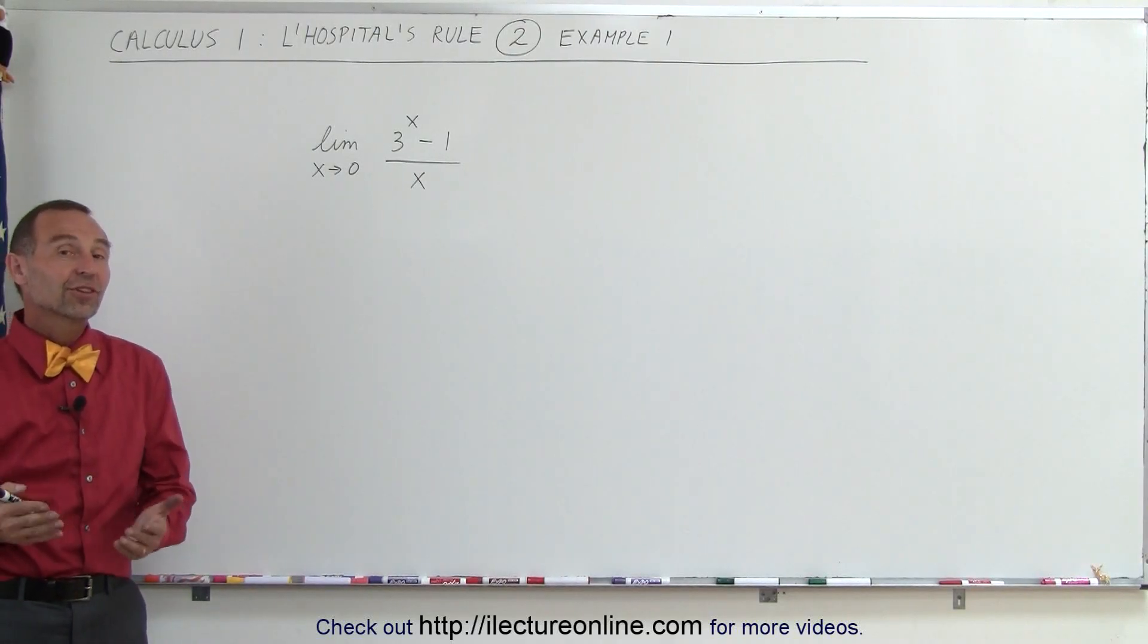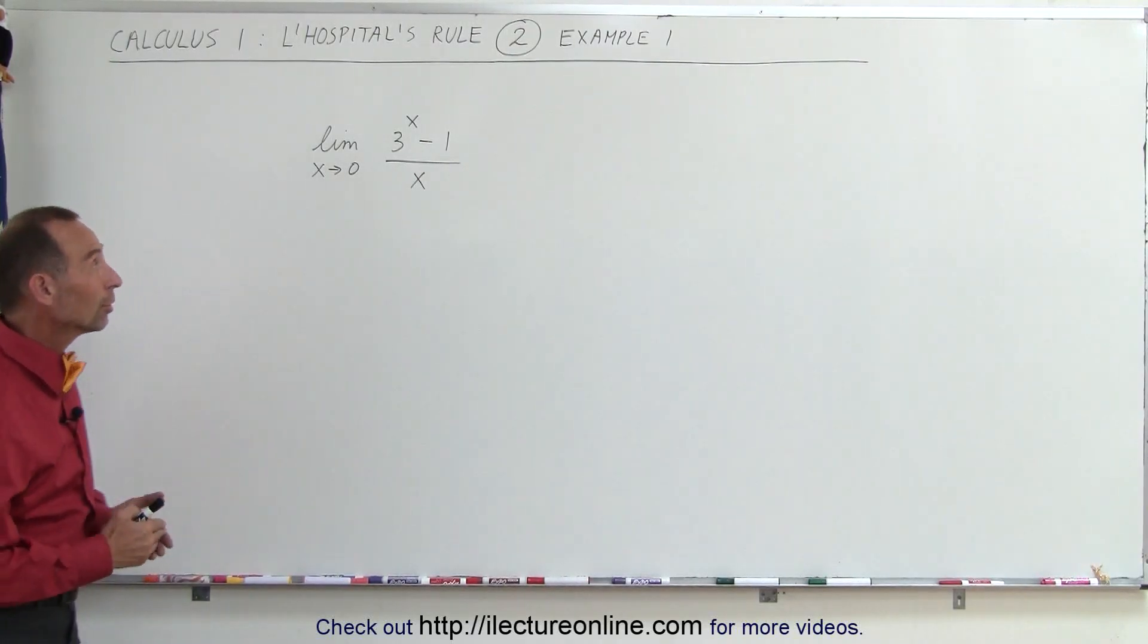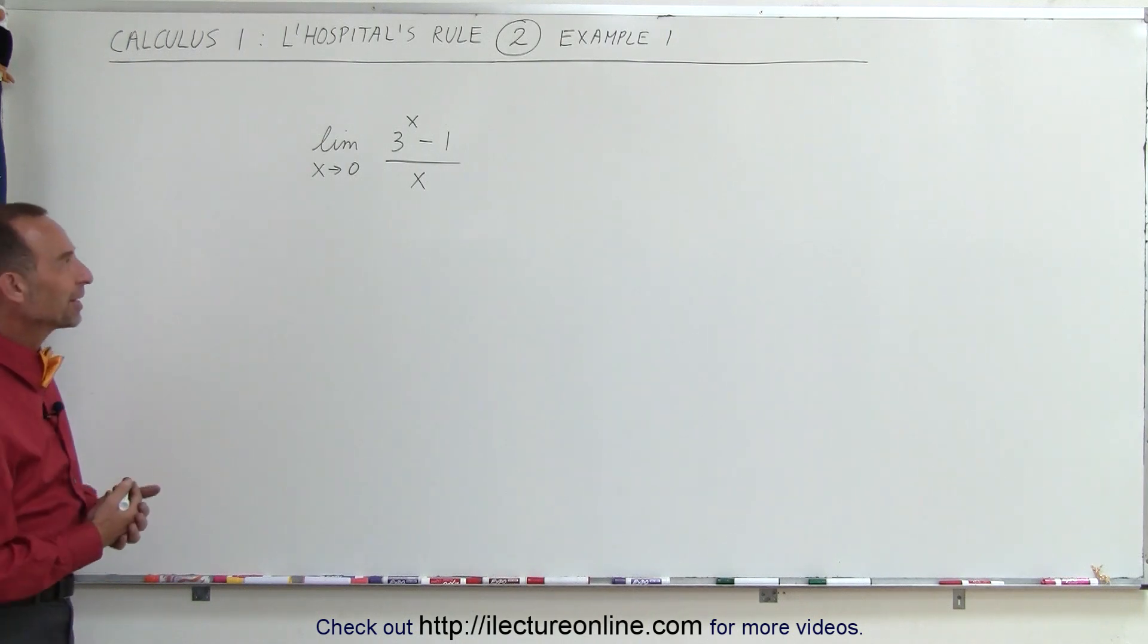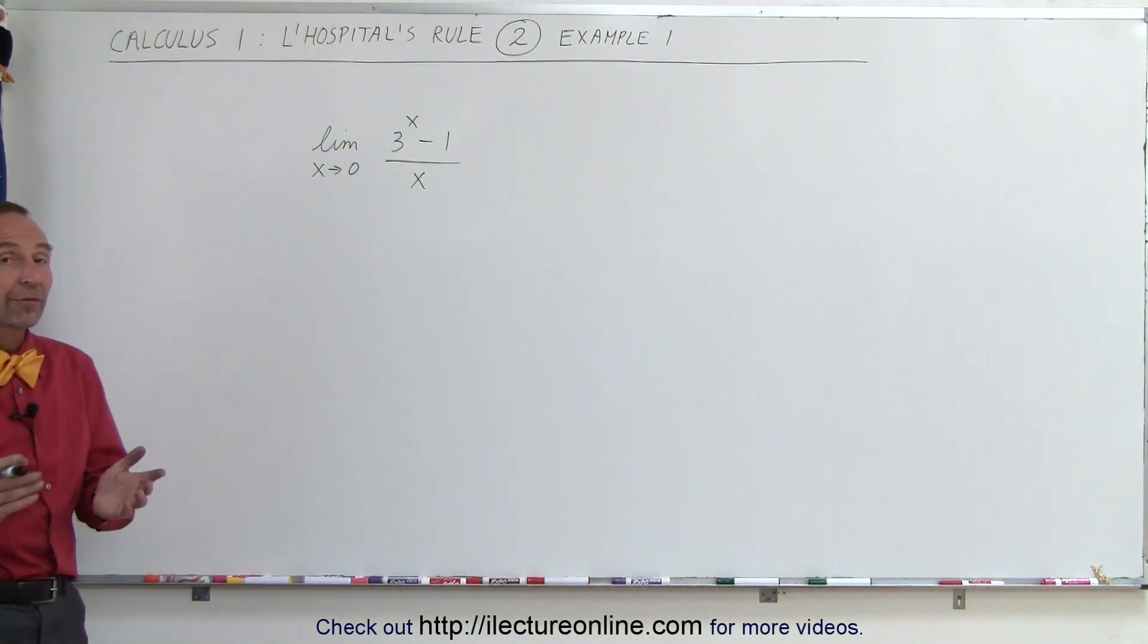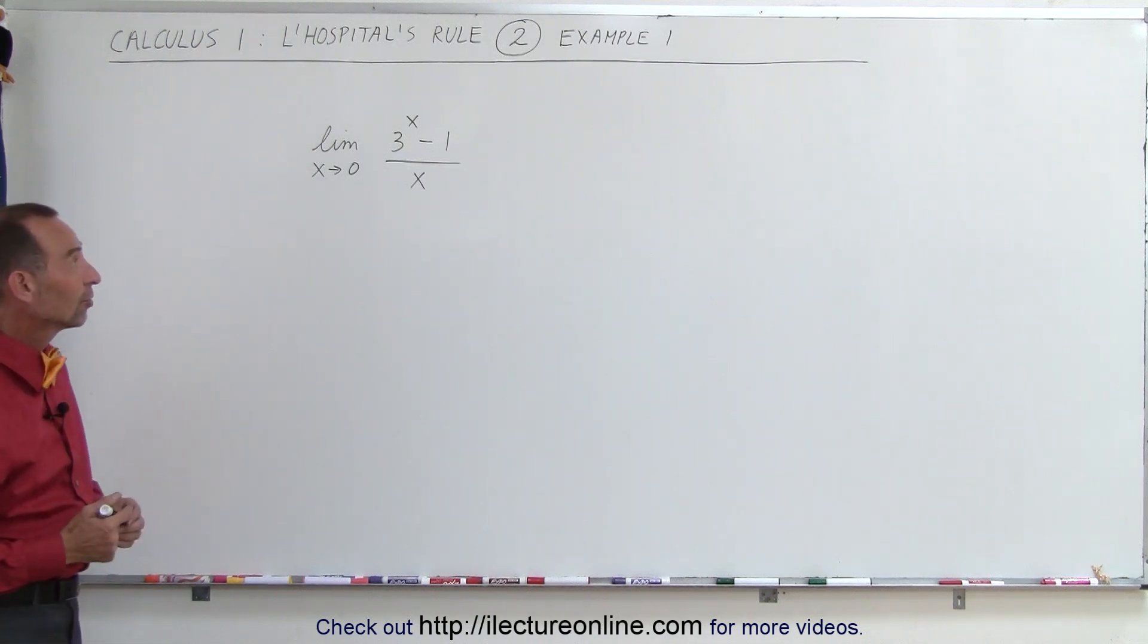Welcome to our lecture online. Here's our first example of how to use L'Hôpital's rule on a very interesting problem. We have 3 to the x minus 1 divided by x, and we're supposed to find the limit as x approaches 0.